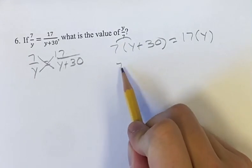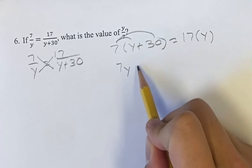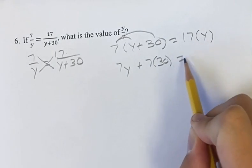So first, we have to distribute this 7. So we have 7y plus 7 times 30 is equal to 17y.